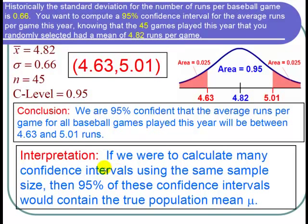we would get a different confidence interval for each one of those samples that we took. 95% of these confidence intervals would contain the true population mean μ of the number of runs per game for this year. And I'm done with the problem.